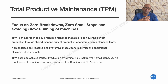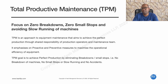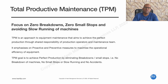TPM is an approach to equipment maintenance that aims to achieve perfect production through shared responsibility of the production and maintenance team. It emphasizes proactive and preventive measures, targeting no machine breakdowns, no small stoppages, and maintaining machines at rated speed and maximum potential.